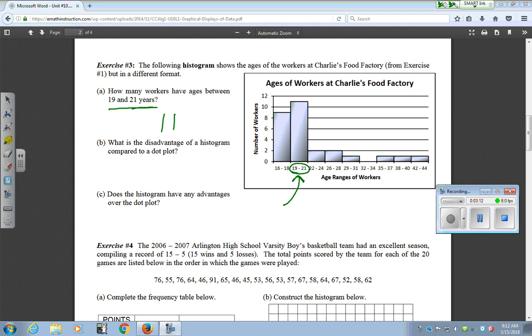Now they ask for a disadvantage. What makes this histogram not as good as a dot plot? If you look at that 19 to 21, you don't know the exact number for each age in this case. Maybe there's 10 people at 19, maybe there's eight people at 19. We just don't know.